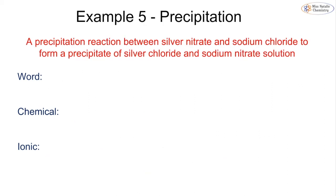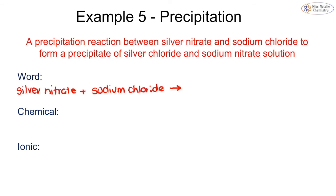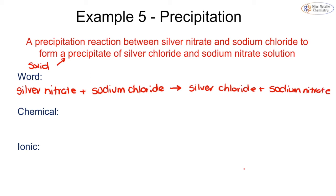Example five is a precipitation reaction — the test for a halide ion using silver nitrate. We are reacting silver nitrate plus sodium chloride. The word equation gives us: silver nitrate + sodium chloride → solid silver chloride (a precipitate) + sodium nitrate solution. A precipitate is another word for a solid, and in precipitation reactions we take two solutions and form an insoluble solid.